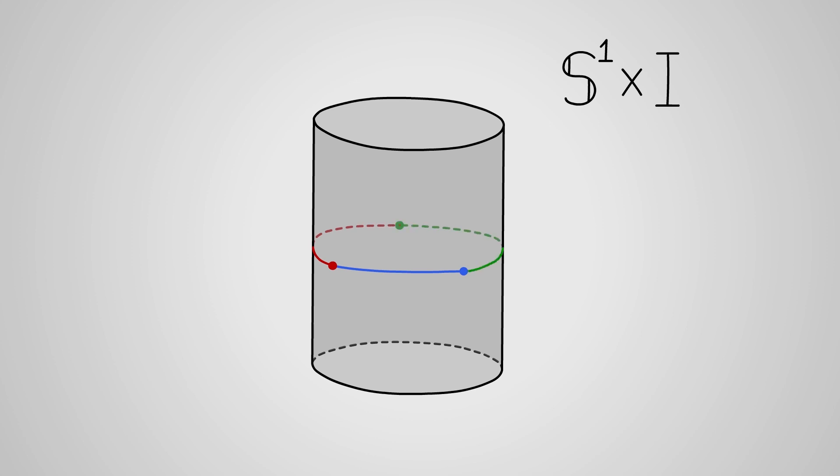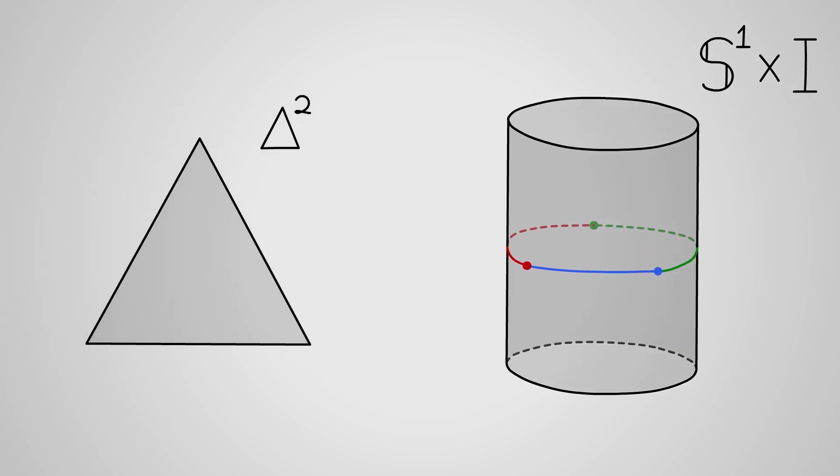If we draw our one simplex so that they loop around the cylinder, then something interesting happens. Any function from delta two into this space, by definition, maps delta two onto the outside of this straw, since x is just the outside, it's hollow. So if it takes the boundary of delta two to our chosen lines, then it has to somehow wrap its interior around the outside. But since our lines form a full loop, it's impossible to do this without piercing the simplex.